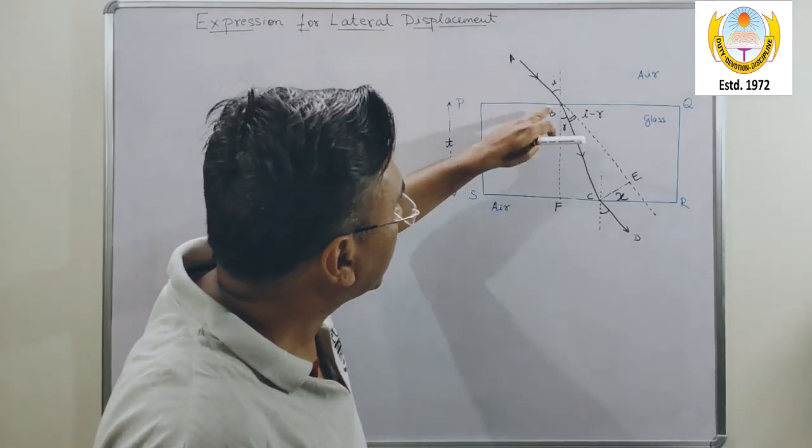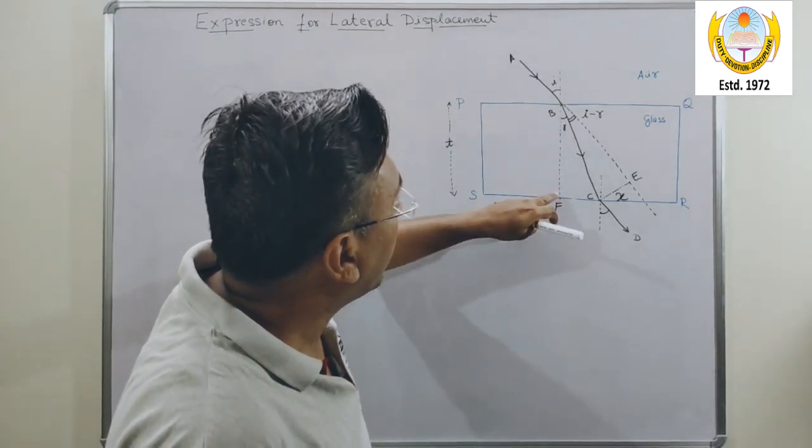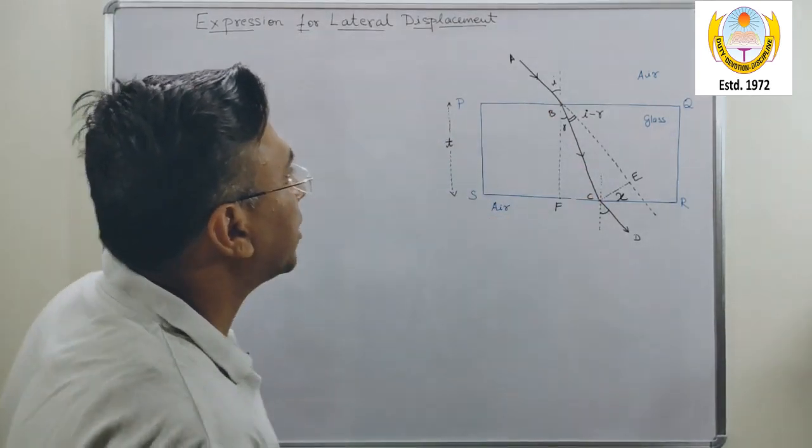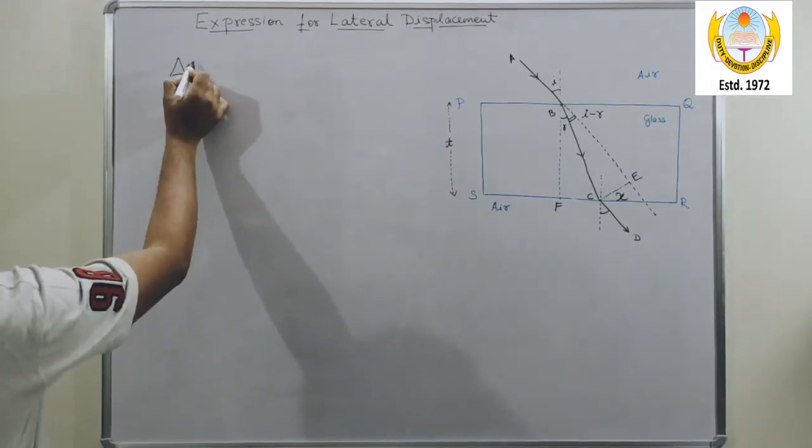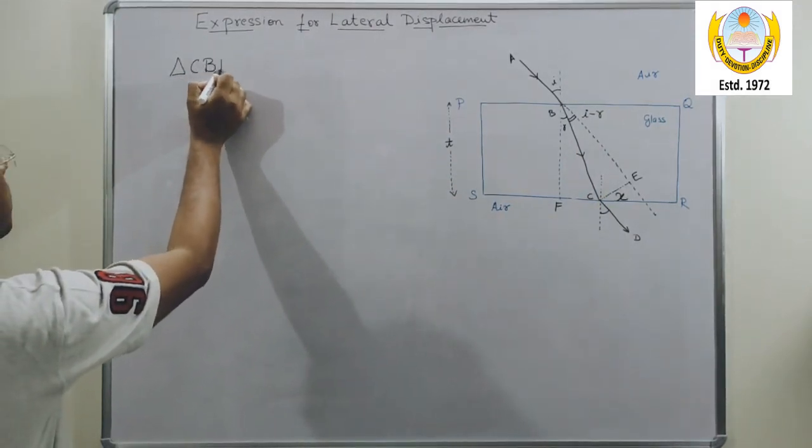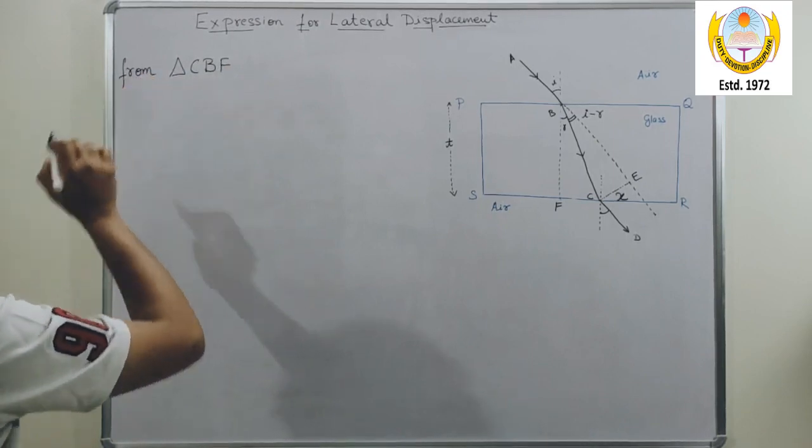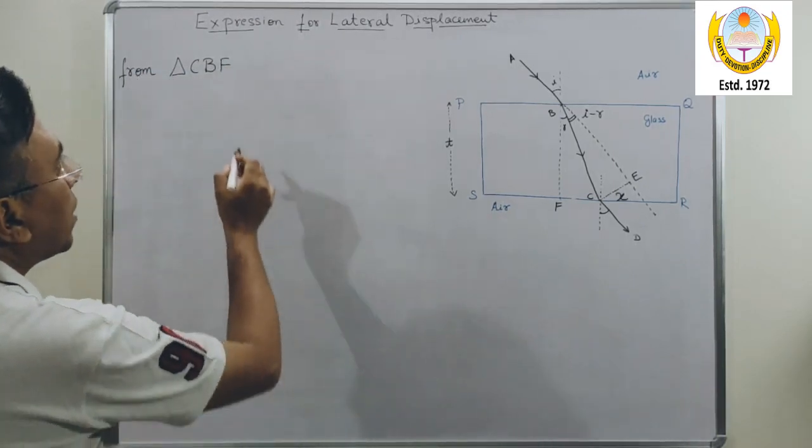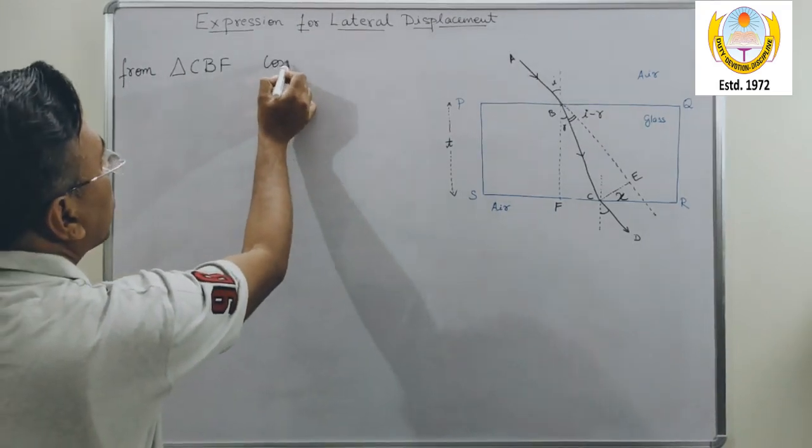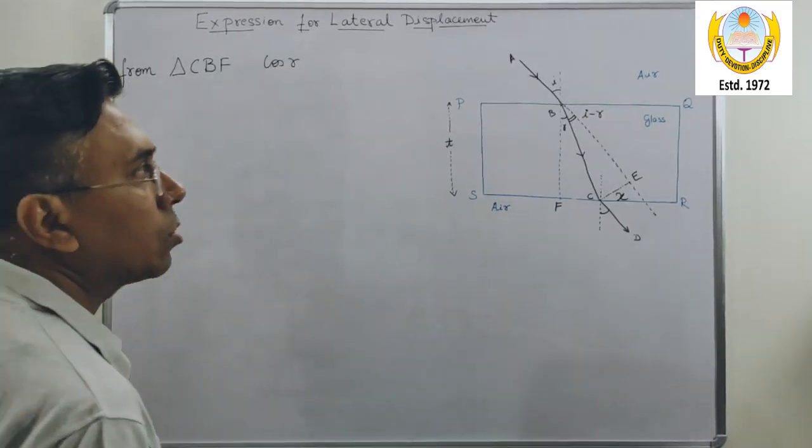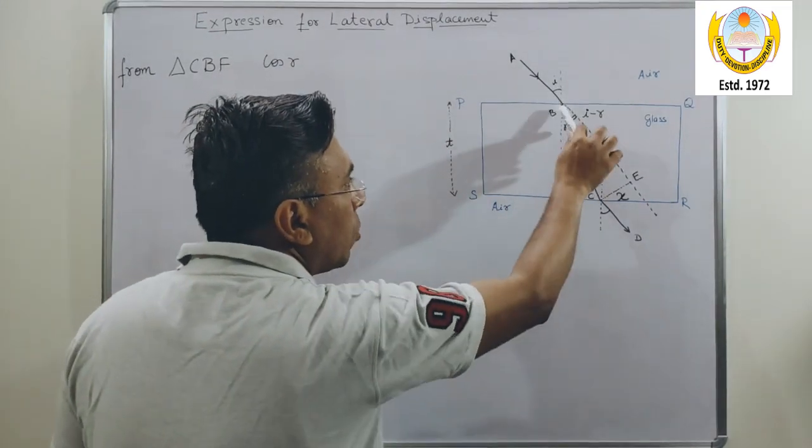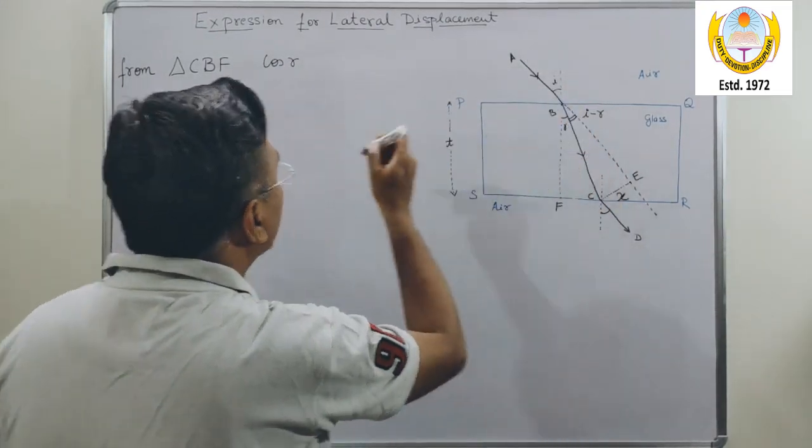Now let's consider the triangle CBF. From triangle CBF, I can write the value of cos R, which is BF upon BC, base upon hypotenuse.